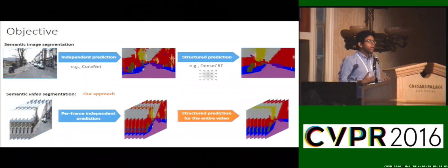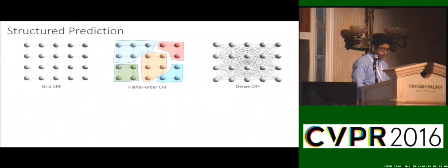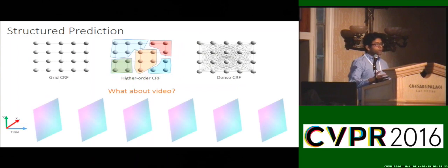In this work, we propose a novel structure prediction framework for the entire video. Given per-pixel unaries, our structure prediction pipeline operates over all pixels in the whole video and assigns labels to the whole video jointly. This allows us to exploit context in a much bigger fashion, not just restricted to single image context.